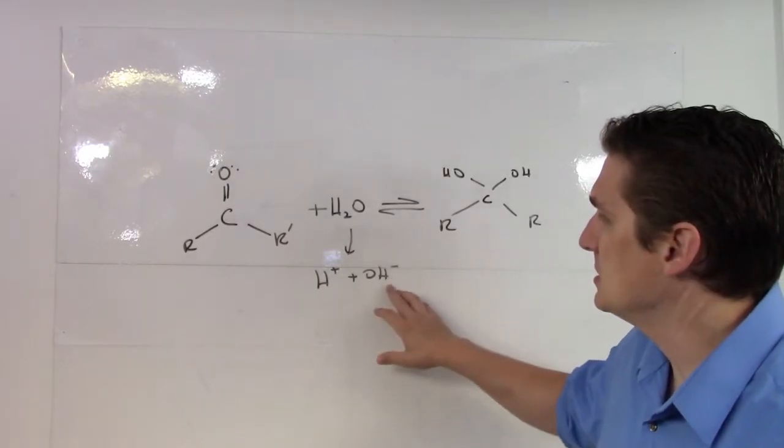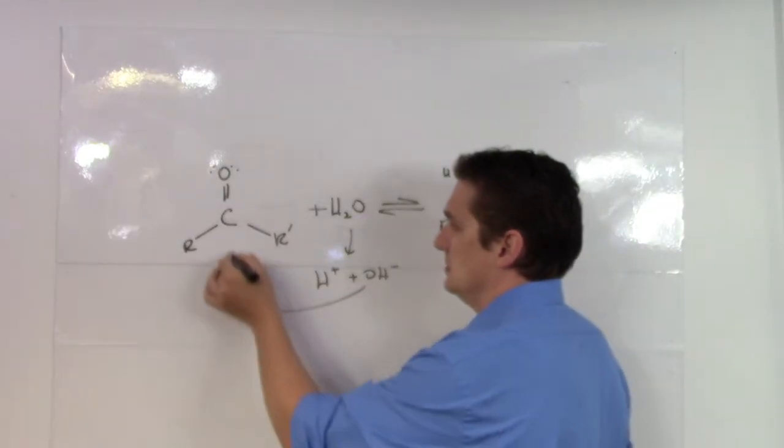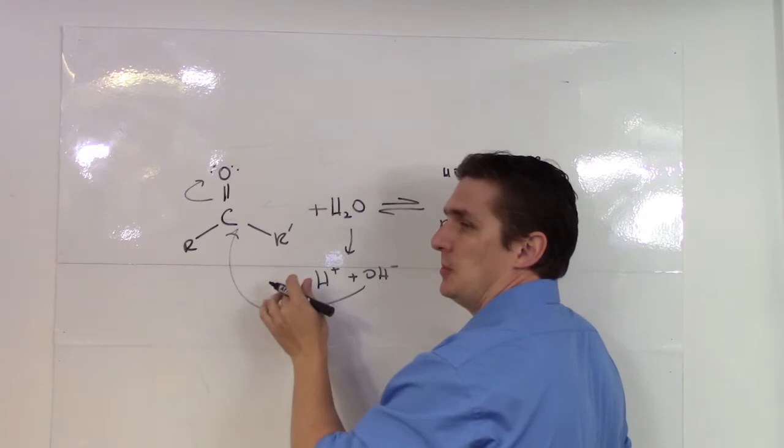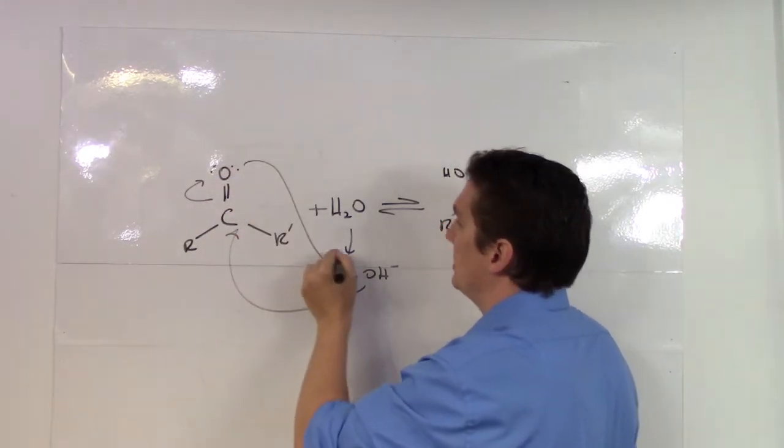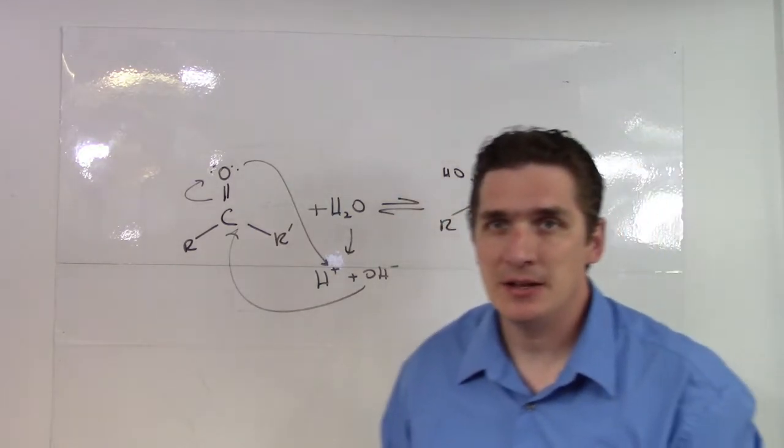So what's going to happen is that this OH group is going to attack the carbon, promote a lone pair, promote a bond up to a lone pair, and then the hydrogen is going to get attacked by a lone pair to give us this geminal diol.